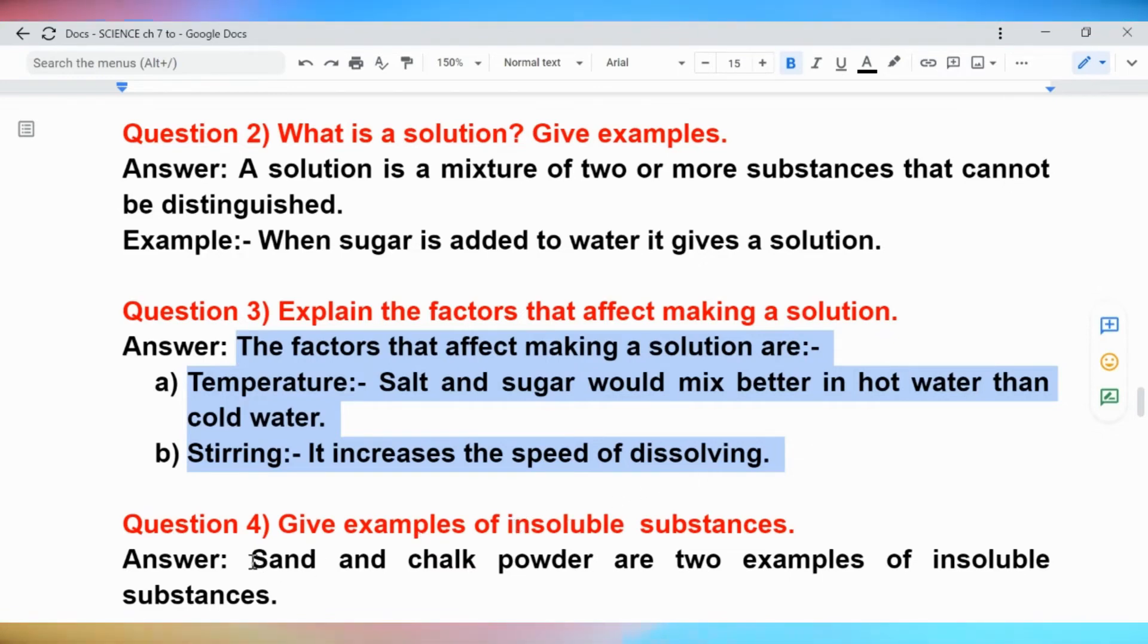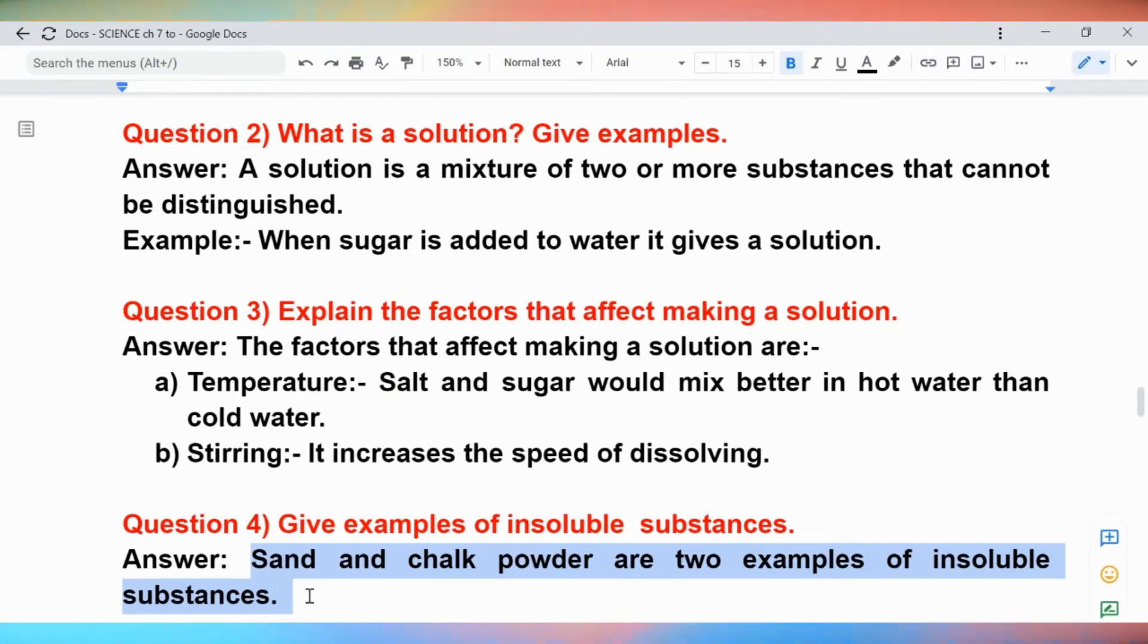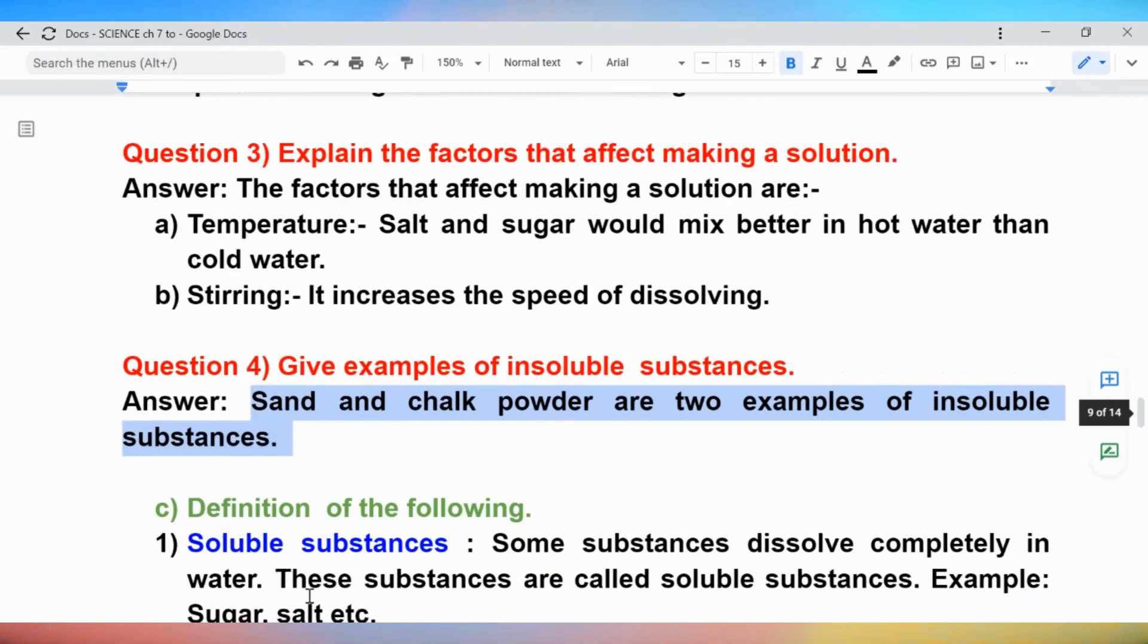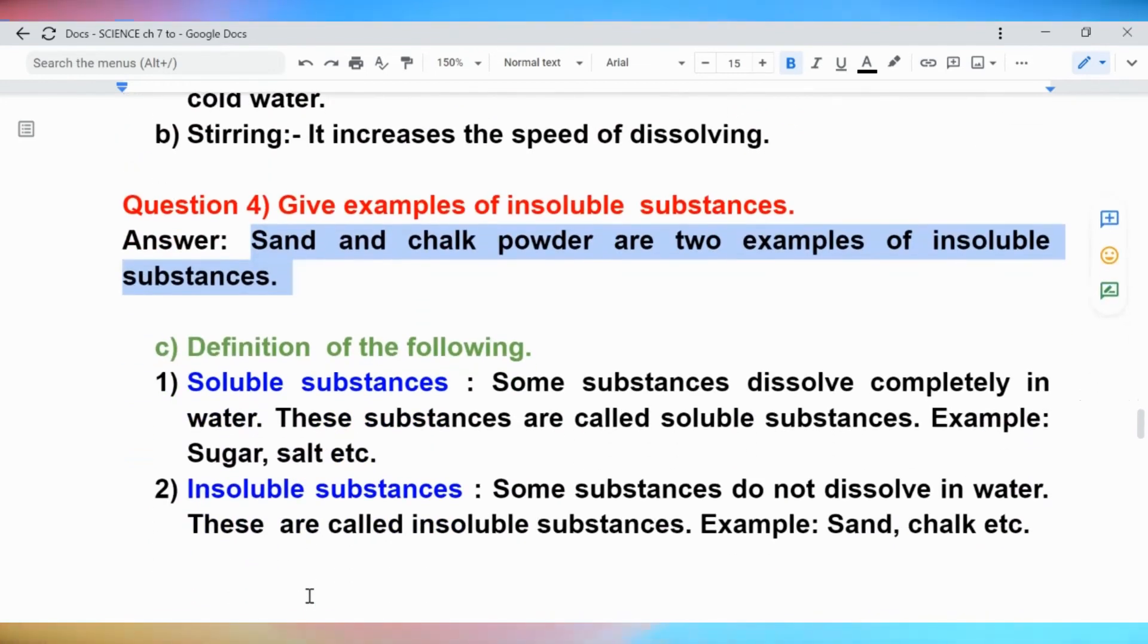Question 4: Give examples of insoluble substances. Answer: Sand and chalk powder are two examples of insoluble substances.